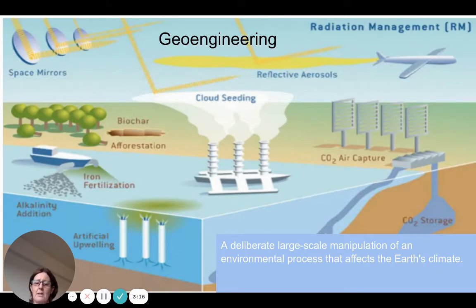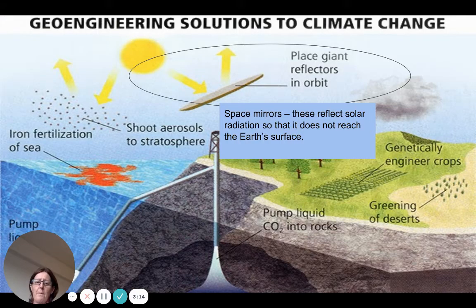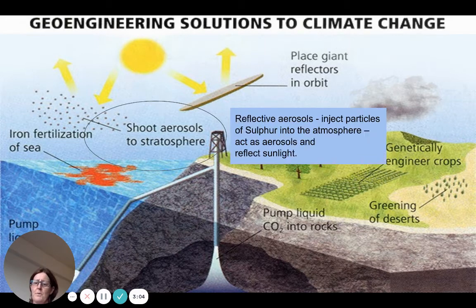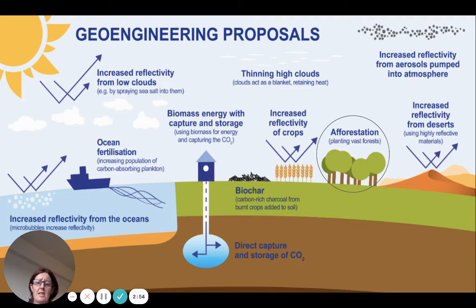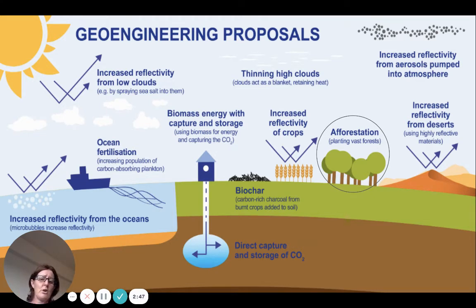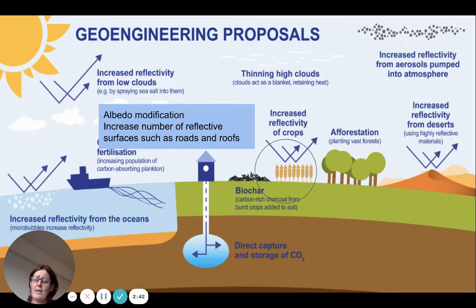Geoengineering can really help — this is a large-scale deliberate attempt to manipulate what is going on. For example, putting mirrors up to reflect incoming solar radiation means the Earth's surface isn't as warm. Similarly, shooting aerosol particles up into the stratosphere would reflect more incoming solar radiation. Afforestation on a large scale — planting vast amounts of forests — would absorb CO2 and remove it from the atmosphere.